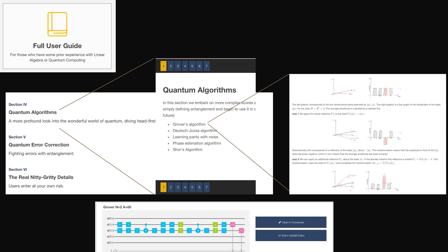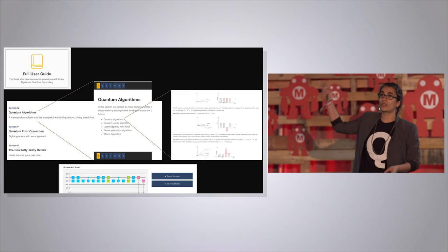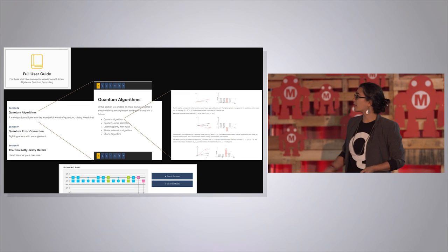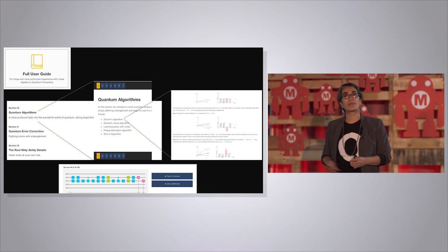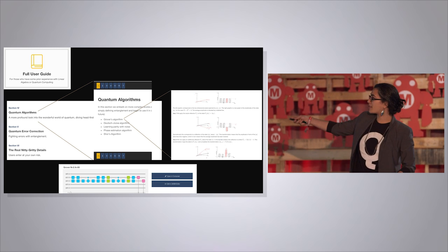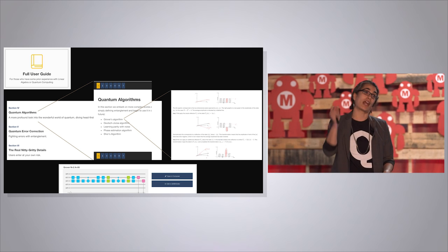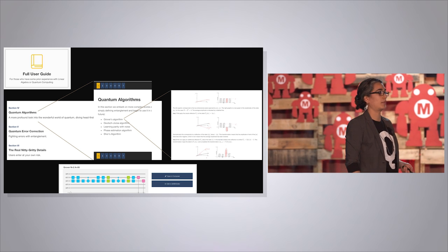Once you get through the beginner's guide and you're really keen, go into the full user guide. This shows you some of the algorithms you can learn about, including Grover's algorithm — you can get a whole derivation, see how to think about quantum interference and amplitude amplification, and get the sequence of gates you need to implement Grover's algorithm on the real device. You can actually implement that algorithm on a real quantum computer.